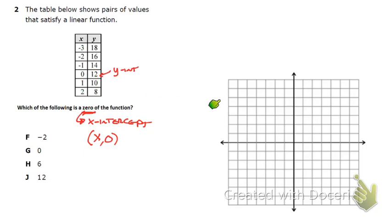When I look at it on the graph, I can plot these three points. Negative 3, 18 is going to be up here somewhere off my graph. Then negative 2, 16 is going to be up there. Negative 1, 14 is off my graph. 0, 12 is off my graph. 1, 10 would be somewhere in here around 7, 8, 9. And then 2, 8 would be right there.